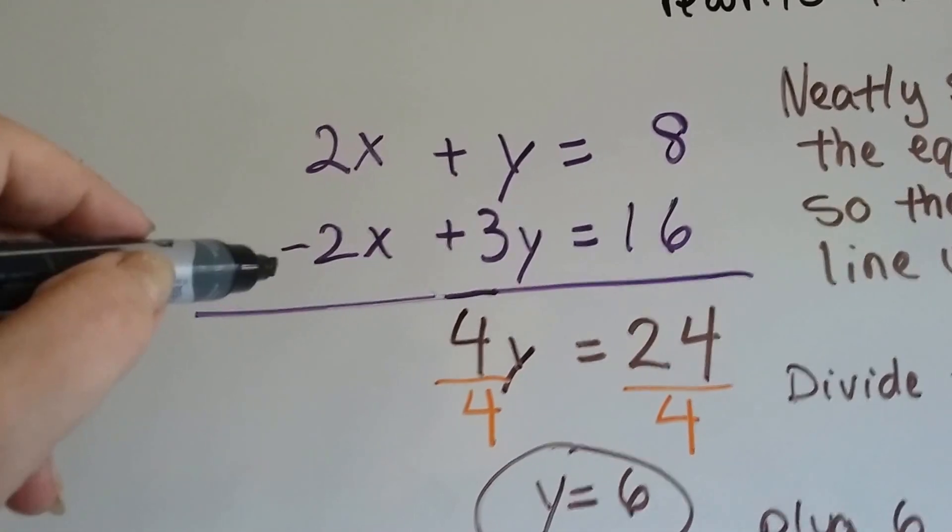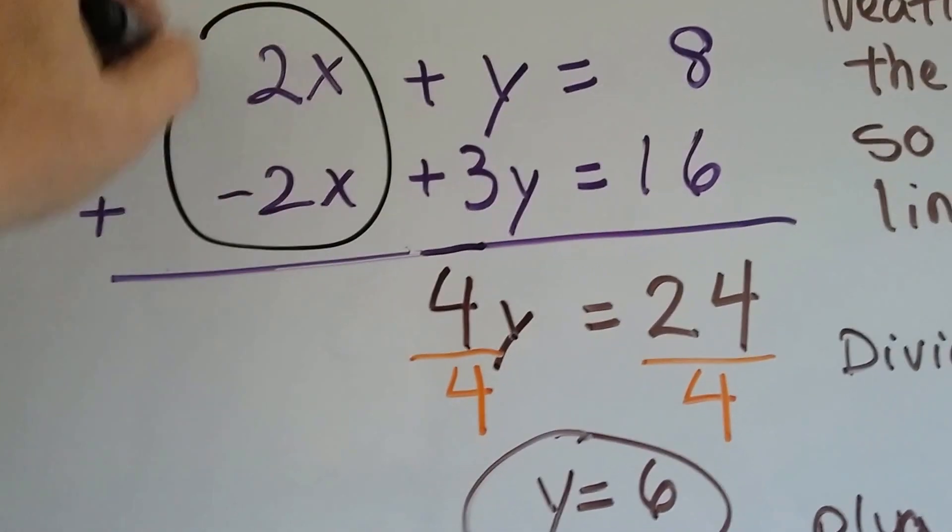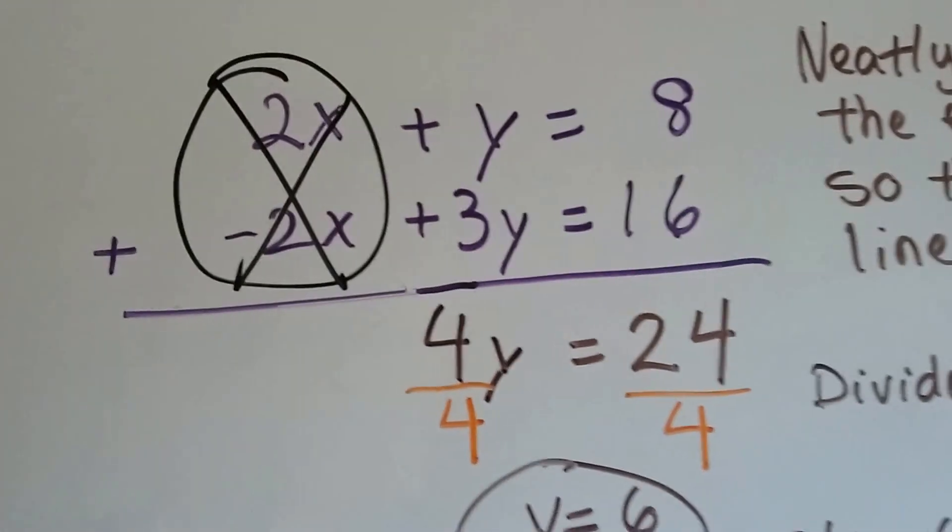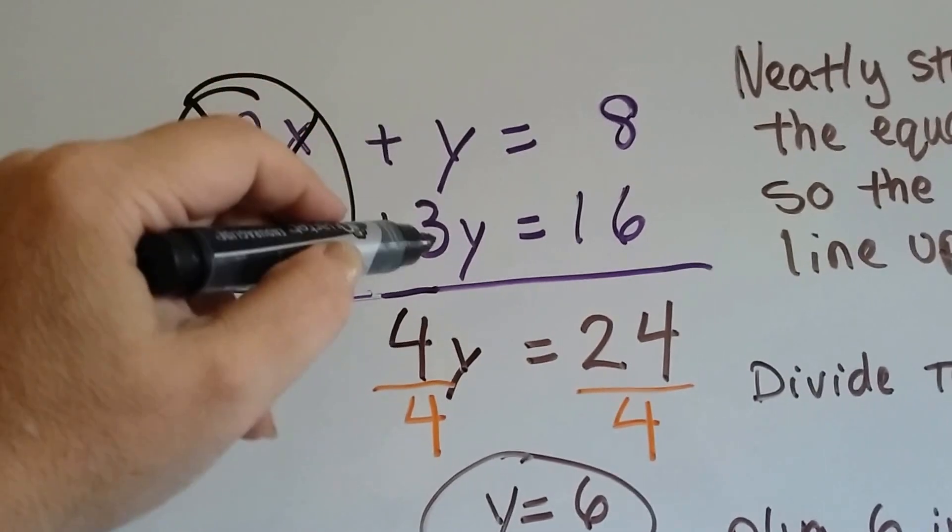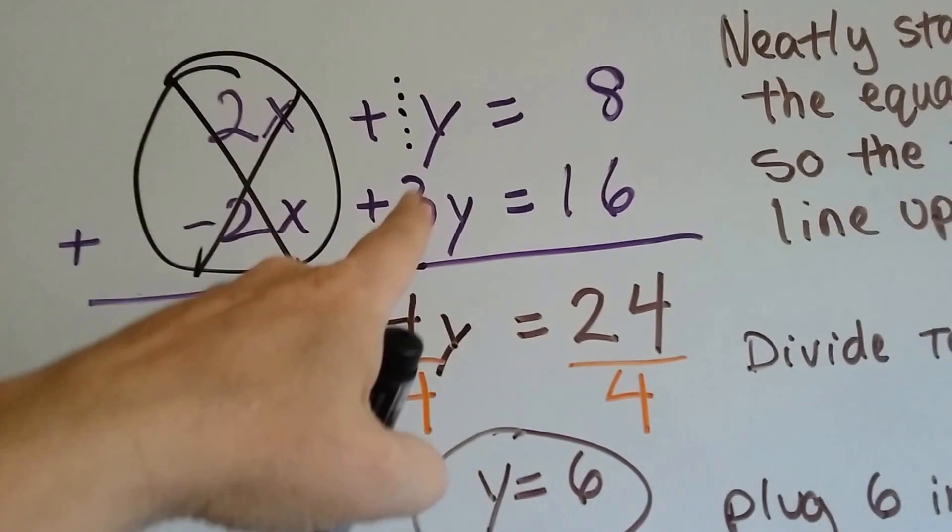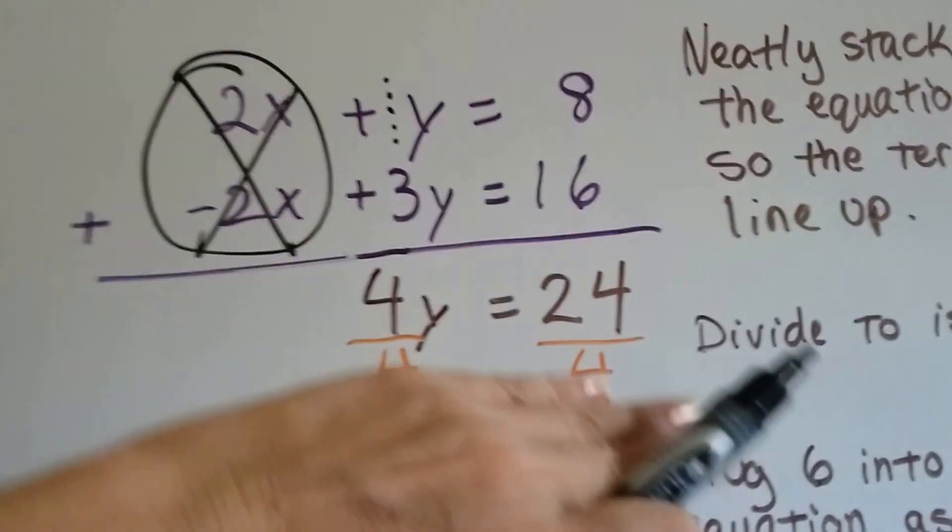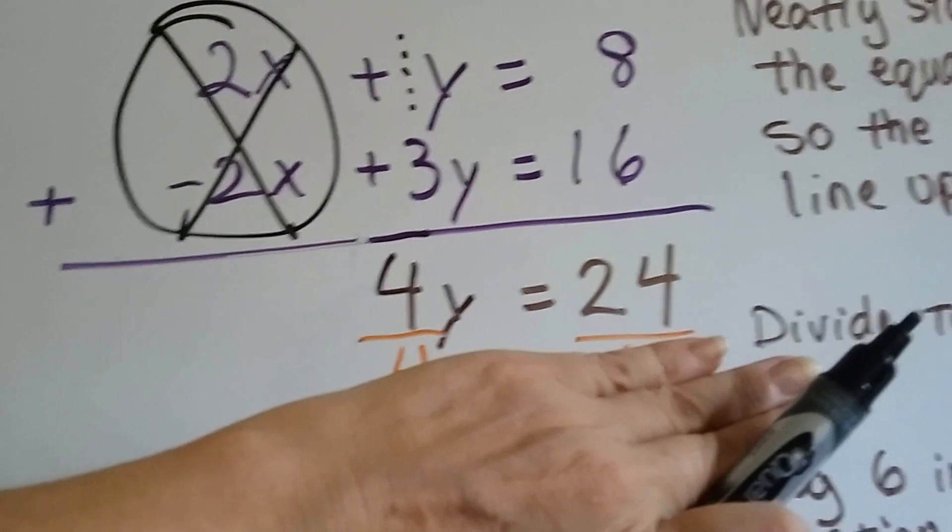So we've got a positive 2x, and we're going to add a negative 2x, and that's going to create a zero pair. And we have a y and 3y, that's going to give us 4y, because remember there's our friend the invisible one there, so it's 4y. And 16 and 8 is a 24, so we've got 4y equals 24.